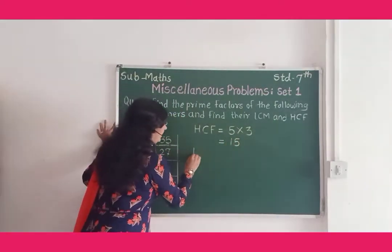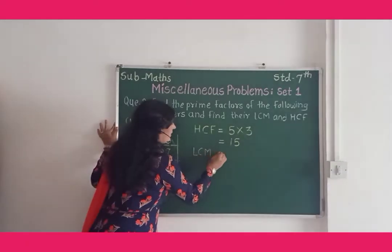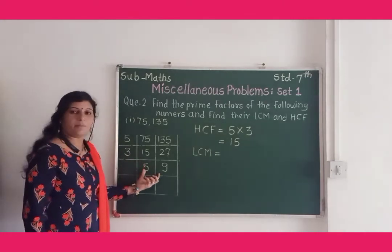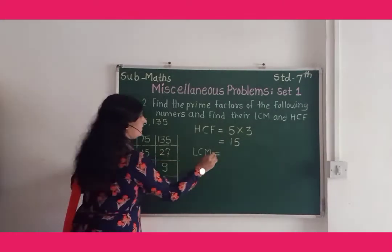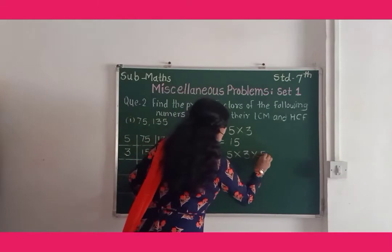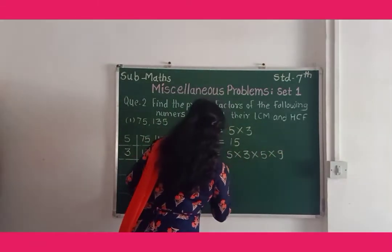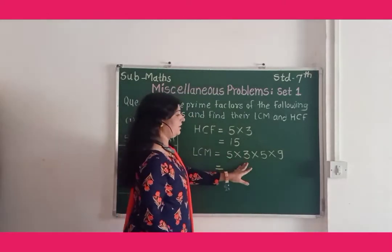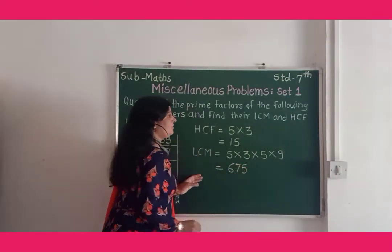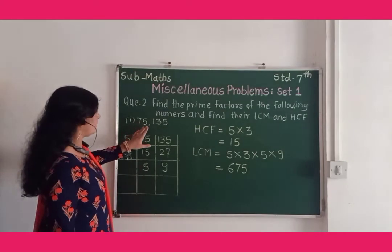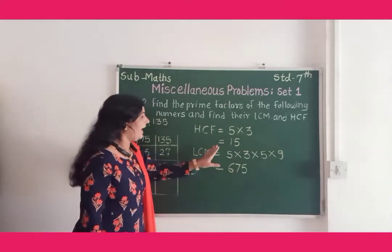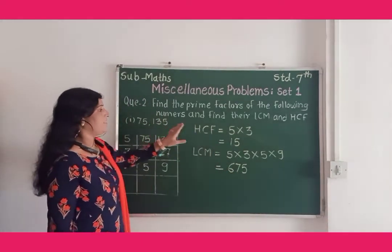LCM is the multiplication of common factors and the uncommon factors. So here we write 5 into 3 into 5 into 9. This is equal to 675. So LCM of 75 and 135 is 675 and HCF of these two numbers is 15.